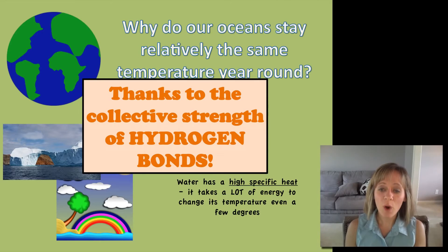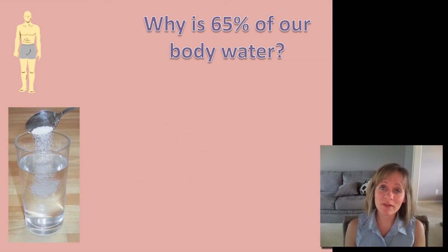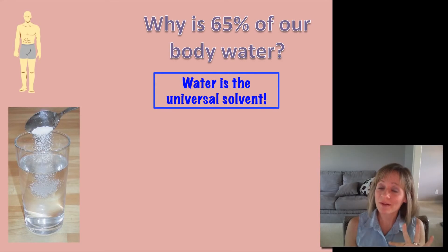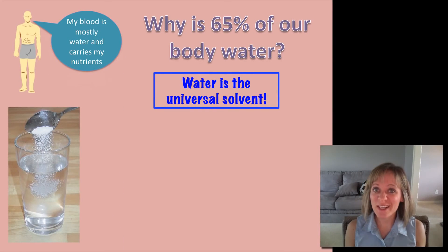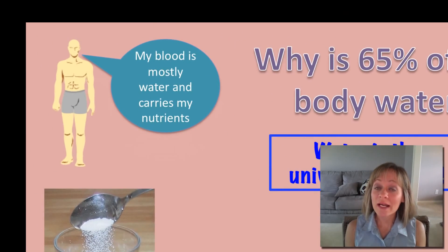The fourth and last unique property sort of explains why our body is made up of 65% water. The answer is the fourth property: water is the universal solvent. A solvent is simply something that dissolves particles. My blood is mostly water, and I'm glad because it carries all of my nutrients throughout my body—it dissolves all of my nutrients and transports them.